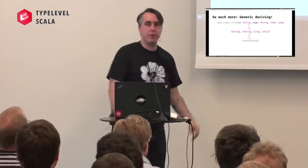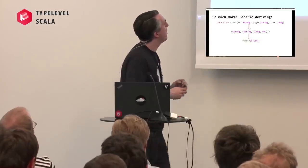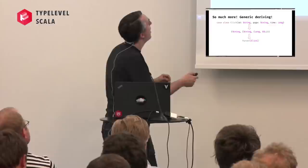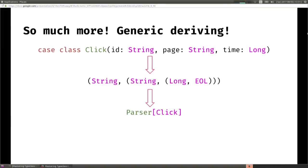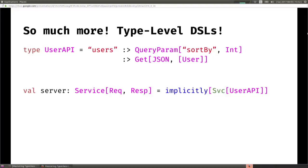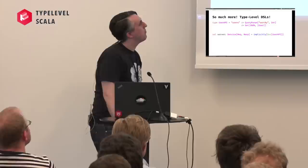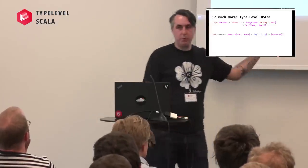There's so much more. This is just the gestalt - the kindergarten of type class induction. You can imagine that if you have a case class like Click with a String, String, and Long, maybe there's some process using macros that produces a type-level list of those field types. Then if you're able to inductively use type class induction to define a parser for such an object, you have a way of generically deriving instances of the type class. If you really want to take this to another level, you can describe your web API at the type level and interpret it using type class induction to produce a server for your API. Totally possible using this technique.